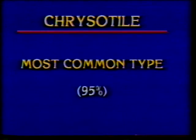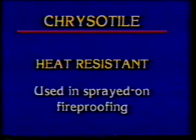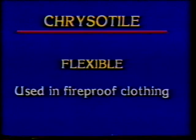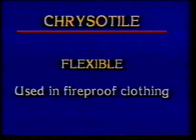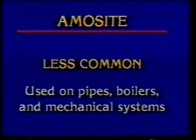Because chrysotile is highly heat resistant, it was often specified and sprayed on as fireproofing material prior to being banned from many applications in the 1970s. Also, chrysotile fibers are flexible. This high degree of flexibility and their resistance to heat make these long fibers particularly useful in the production of fireproof clothing and other textiles. Ammosite asbestos is not used as much as chrysotile, but it is often applied as an insulation material on pipes, boilers, and mechanical systems.